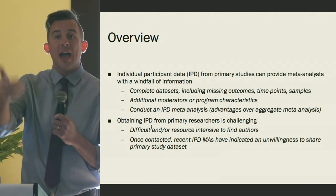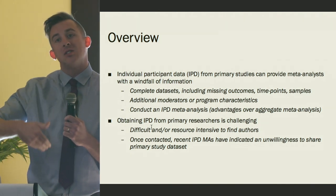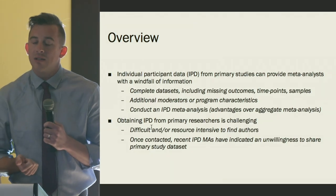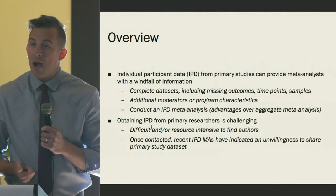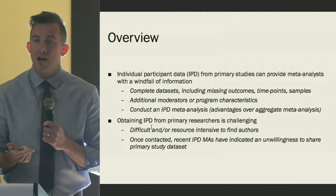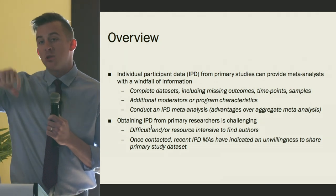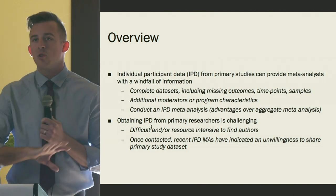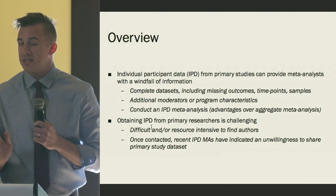If you are going after IPD for meta-analysis, you can do something called an individual participant data meta-analysis itself, which is basically where instead of combining just effect sizes aggregated from single studies, you combine complete data sets. Doing an IPD meta-analysis provides obviously a lot more power, and you can do within-study and between-study covariate analyses, and it reduces aggregation bias.